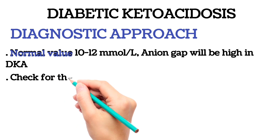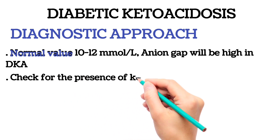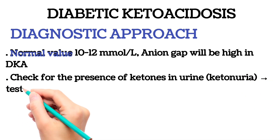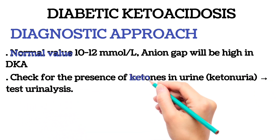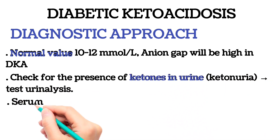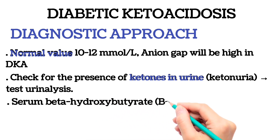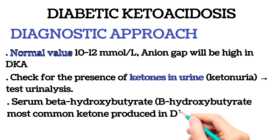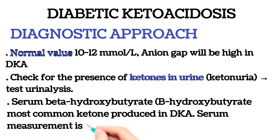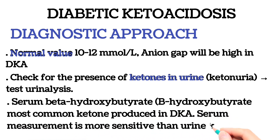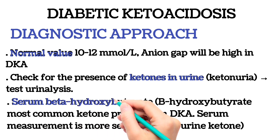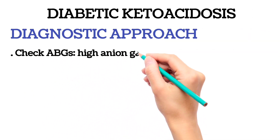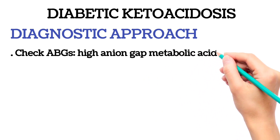Check for the presence of ketones in urine — ketonuria — via urine analysis. Also check serum beta-hydroxybutyrate, which is the most common ketone produced in DKA; serum measurement is more sensitive than urine ketone testing. Check ABGs: DKA shows high anion gap metabolic acidosis with pH less than 7.30.